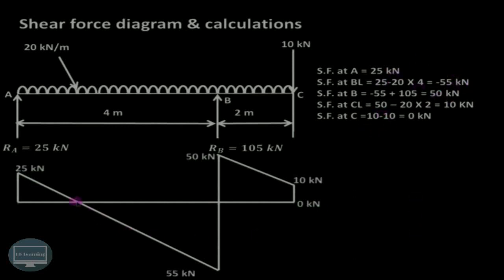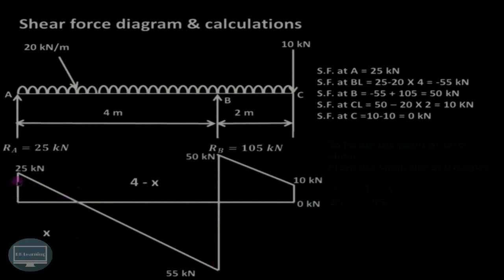These are the various shear force values. There is a point of zero shear — suppose it is at a distance x from A. The total length from A to B is 4 meters, so the remaining length is 4 minus x. We find this point of zero shear by applying the principle of similarity of triangles: x divided by 25 equals (4 minus x) divided by 55. Solving this, the value of x comes out to be 1.25 meters from A.